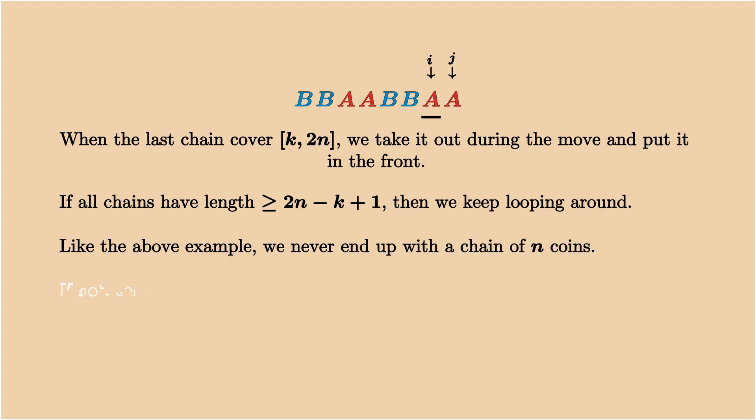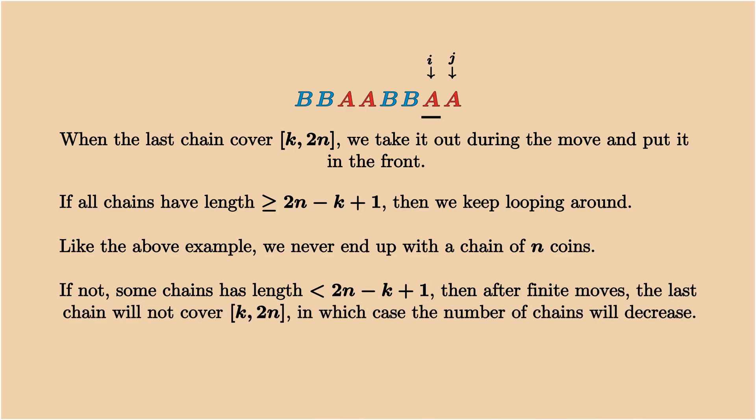Now assume that this is not the case. There is a chain with length smaller than 2n-k+1. Then after some moves, the last chain will not cover the entire interval between k and 2n, which from the previous claim, the number of chains will decrease after the move.